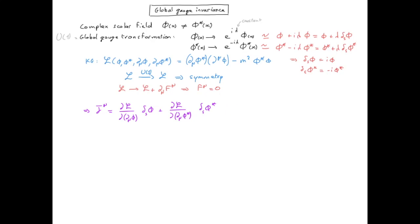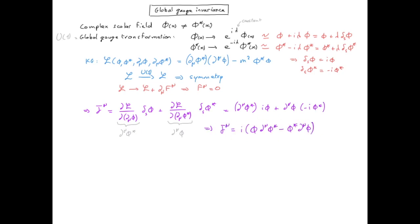We can now calculate these two derivatives from the expression of the Lagrangian. That gives the conserved current, which obeys the continuity equation. The associated conserved charge is obtained by integrating over space the time-like component of the current, and we know that this quantity is constant over time.